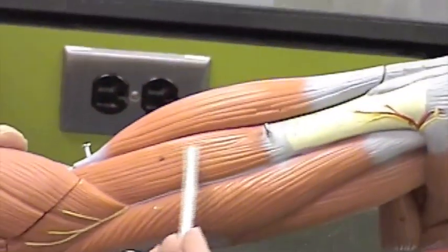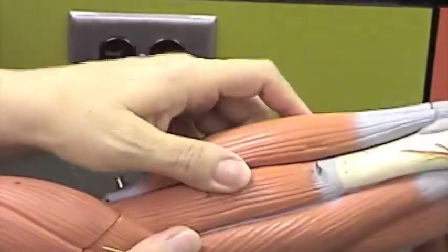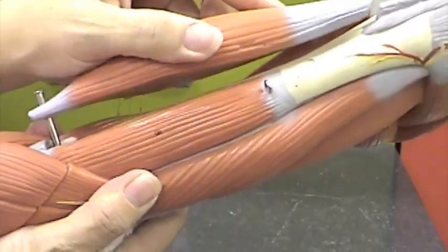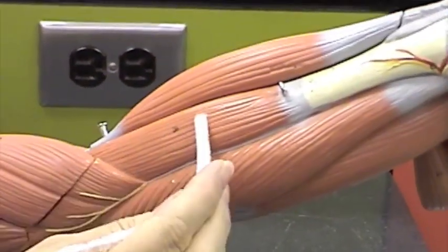Deep to that, we have the brachialis muscle. If I remove this, you're able to see brachialis, quite a large muscle. You'll be able to recognize it both ways. Here is the brachialis muscle.